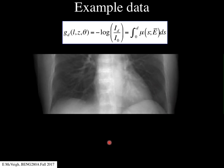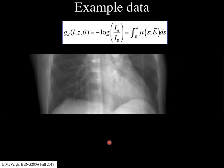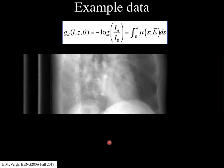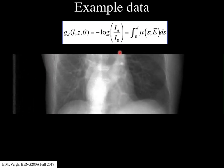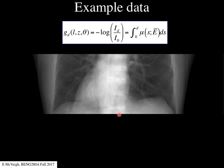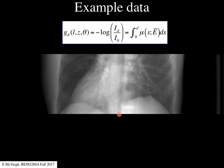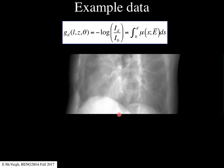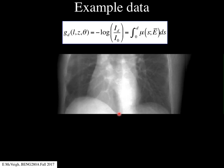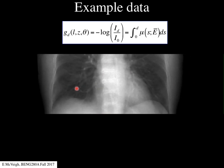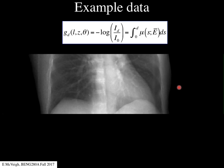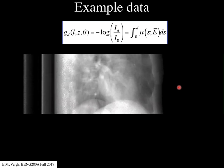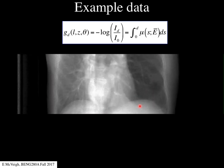Just to review from last lecture, this is what modern two-dimensional CT data looks like at different angles theta. The z direction is usually the slice direction. Most scanners now have at least 64 slices in that direction, going up to 320 on the Toshiba scanner. In the L direction there are about a thousand detectors, so the field of view is not square — it's a rectangle.